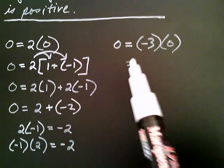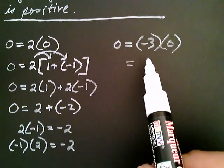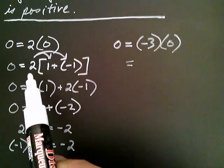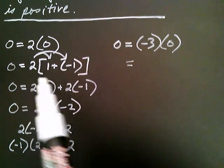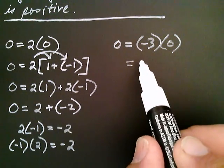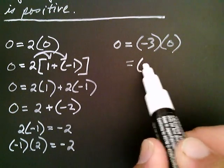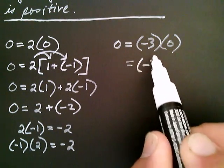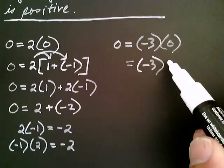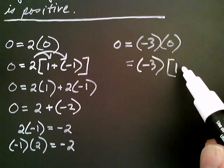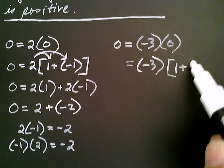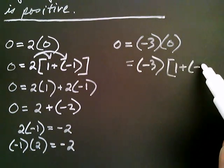The negative three is going to stay as it is — just as the two didn't change in the beginning. But that zero gets written as one plus negative one.